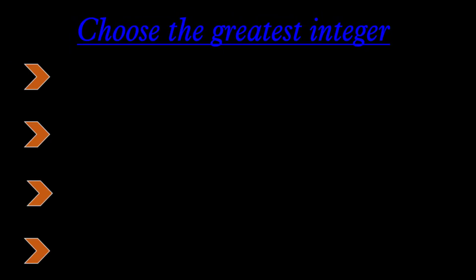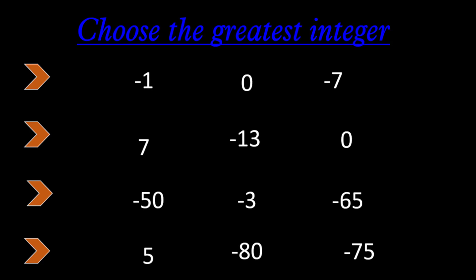Let's choose the greatest integer from each set. First set: negative 1, 0, negative 7. We know that 0 is greater than any negative integer, so the greatest one is 0. Next set: 7, negative 13, and 0. The positive integer is greater than 0 and greater than any negative integer, so the greatest one is 7.